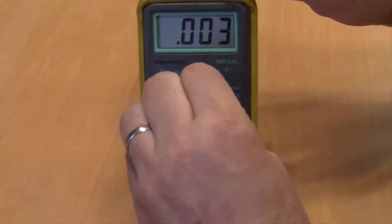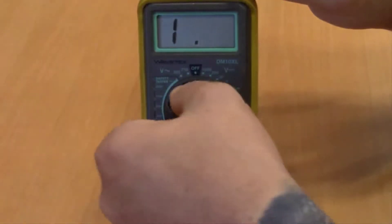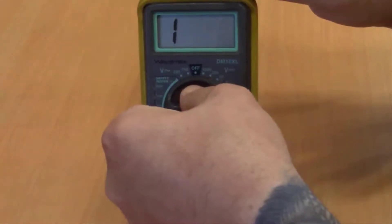Below that you would again have your resistance measurements and again you can see as you click through the ranges your decimal point will move.